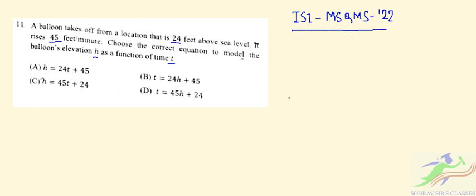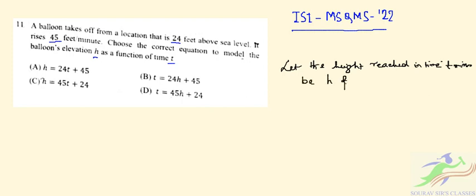It's a pretty easy question. Let the height reached in time t minutes be h feet. It is given that the balloon takes off from a location that is 24 feet above sea level and it rises at 45 feet per minute. So the equation will be (h - 24) / t = 45. If we simplify this equation, we will find that h = 45t + 24.